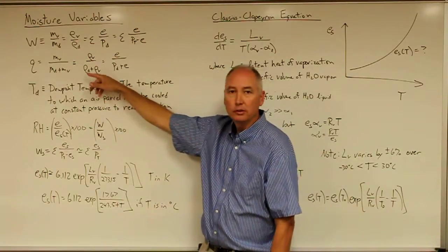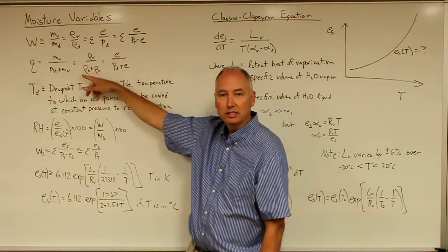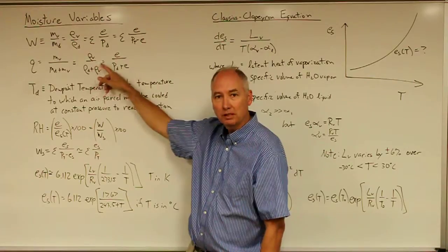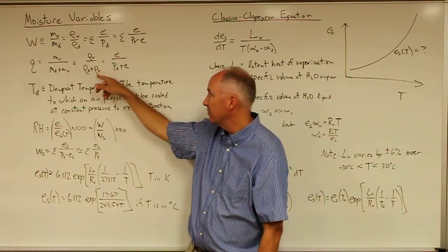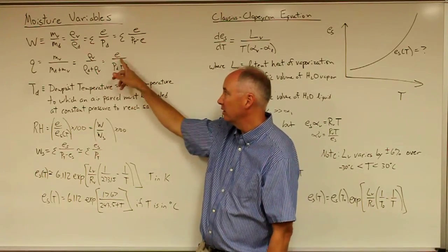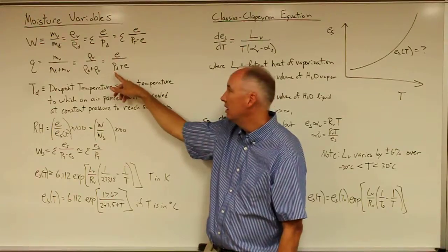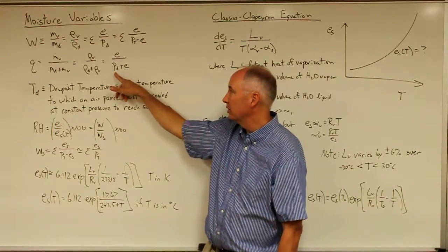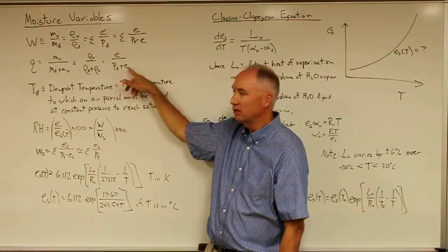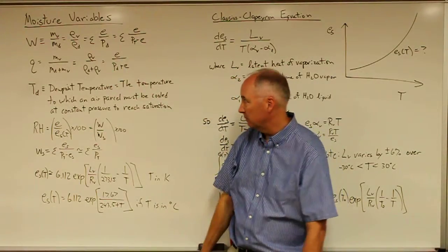Alternatively, you end up with the density of the vapor over the density of the dry plus the density of the vapor, or the vapor pressure over the total pressure, which is the pressure of the dry air plus the water vapor pressure.